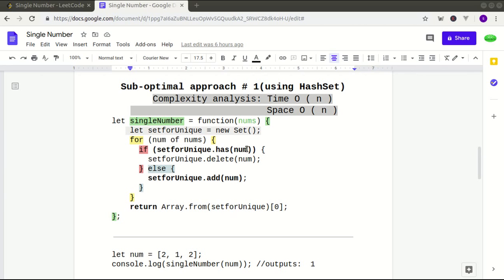So if it has that number already, for example, take my example array here, 2, 1, 2. So if 2 is already there in the first instance, 2 will not be there. We have to insert it into the array. So the if condition here doesn't apply yet. We come to the else condition. It's the first element. There's nothing in the set. It's empty. So we add it to the set.